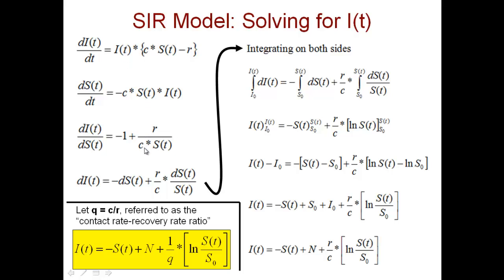So now what we can do is we can write dI(t) equals minus dS(t) plus r over c times dS(t) divided by S(t).